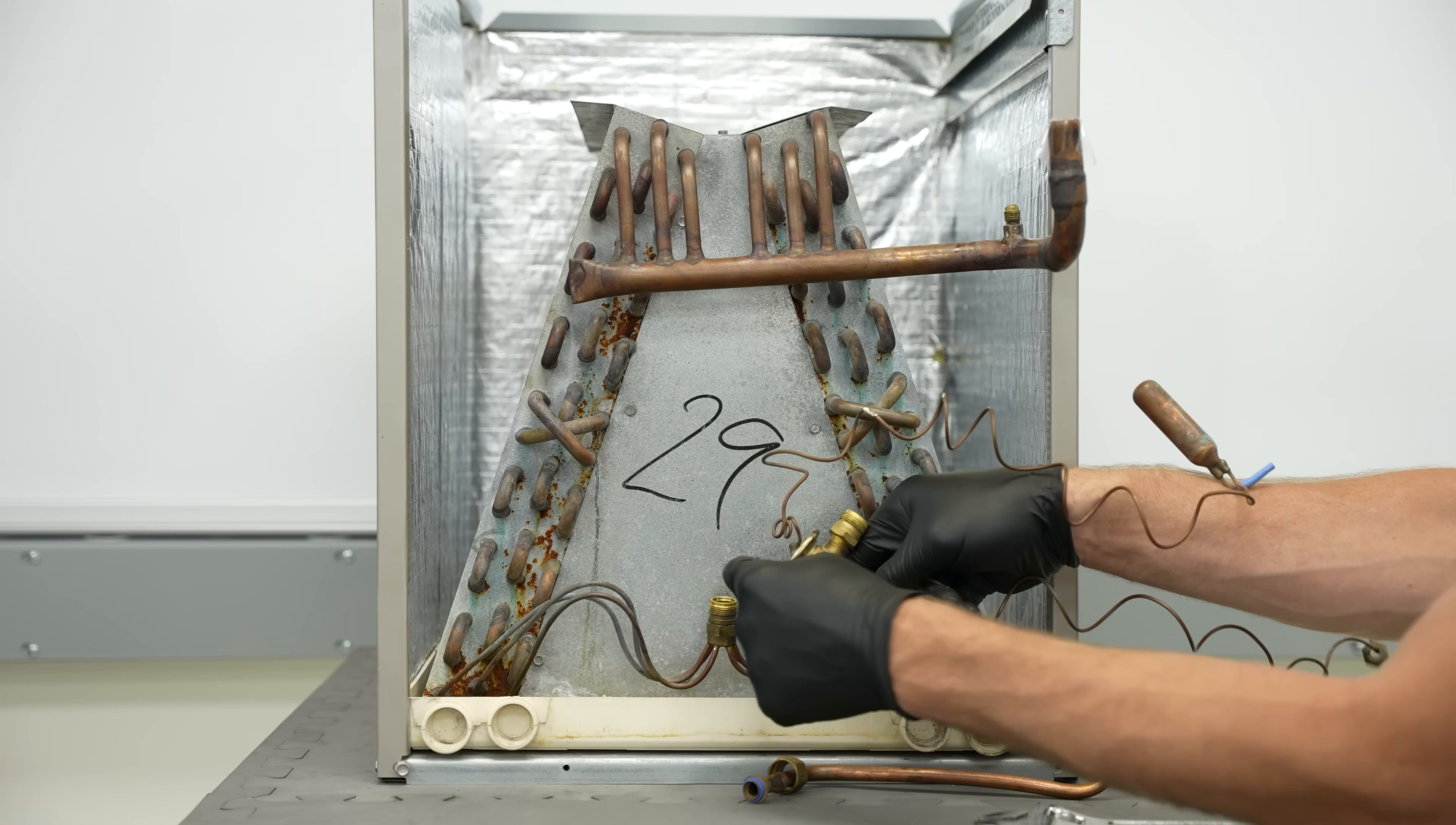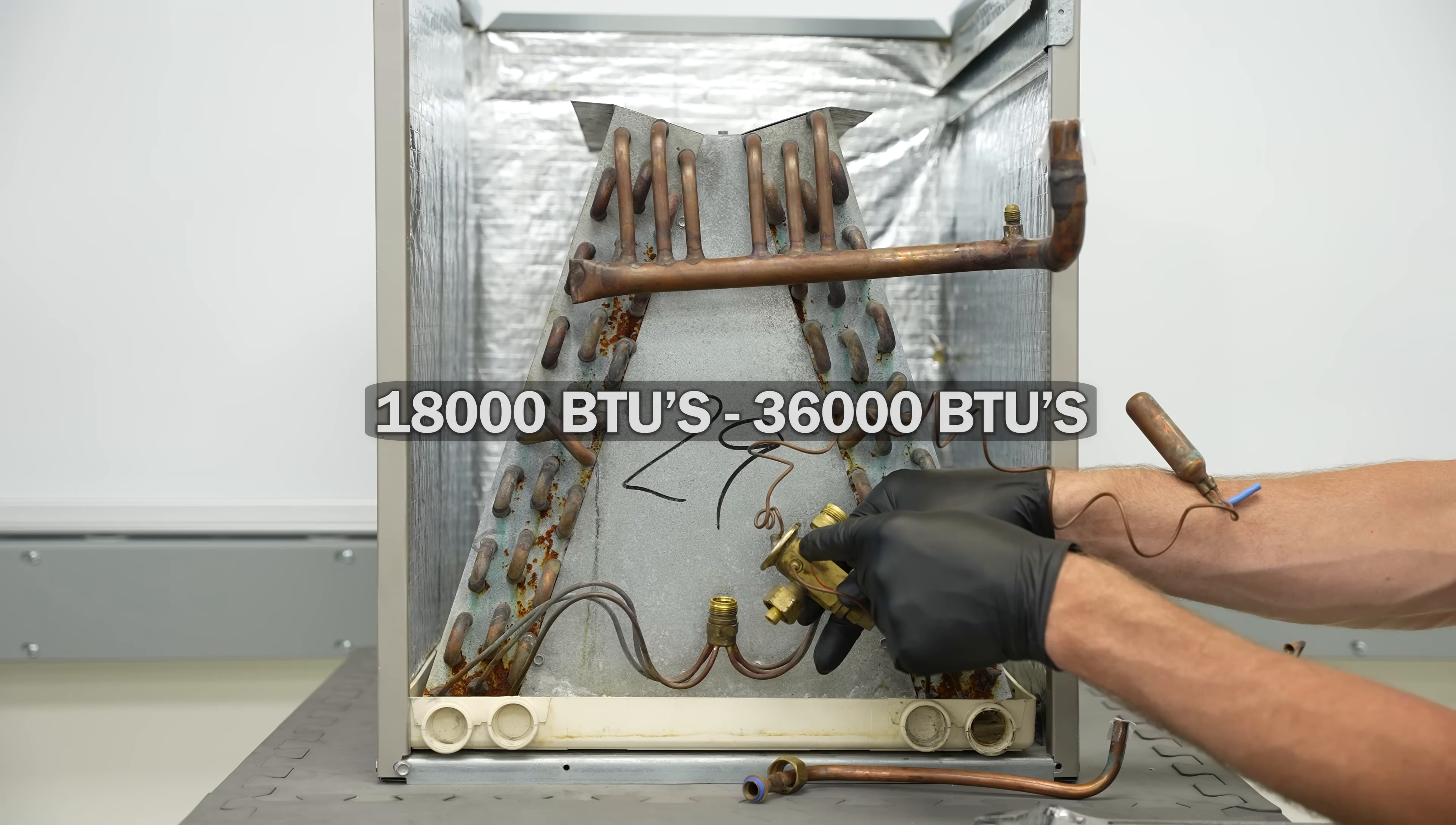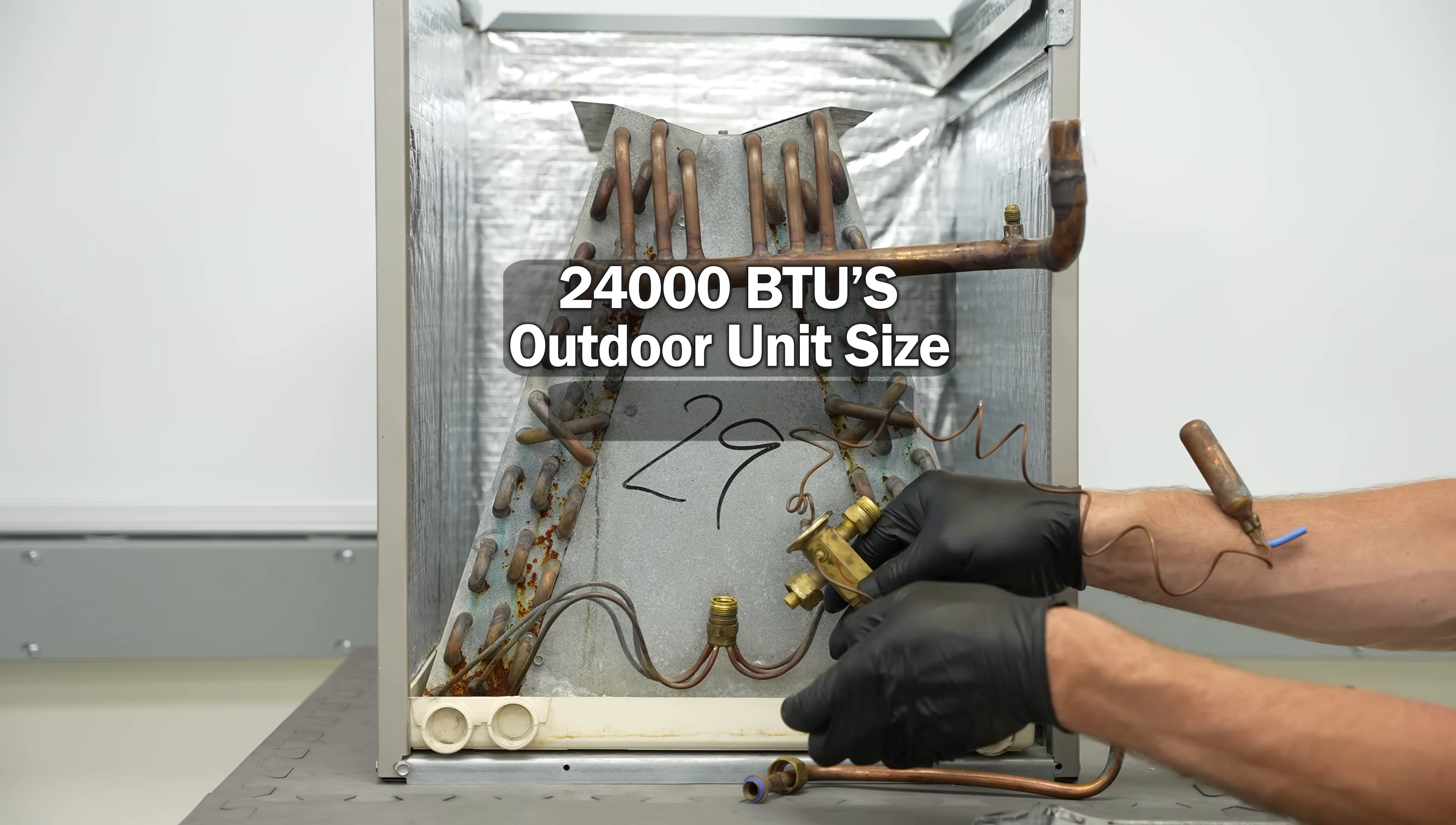Make sure the TXV is rated for the correct refrigerant in the system. At the outdoor unit, it says we have R410A, so this is an R410A TXV. Also make sure that this rating, so this rating is 18,000 to 36,000 BTUs, is covering whatever the BTU size of the outdoor unit is. In this case, it's 24,000 BTUs, so we are good.